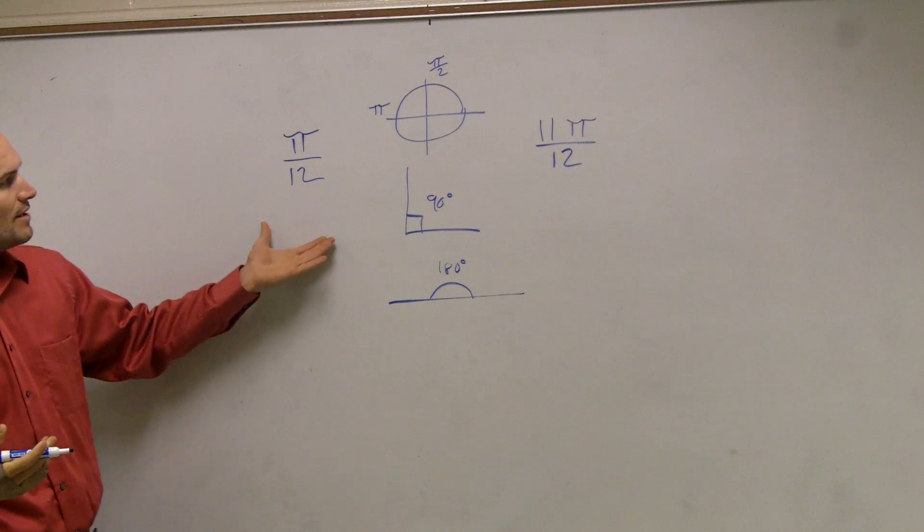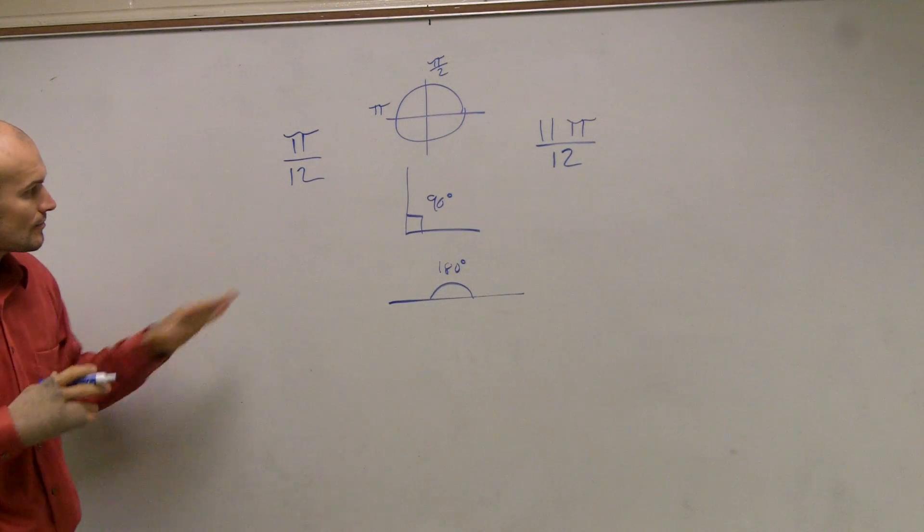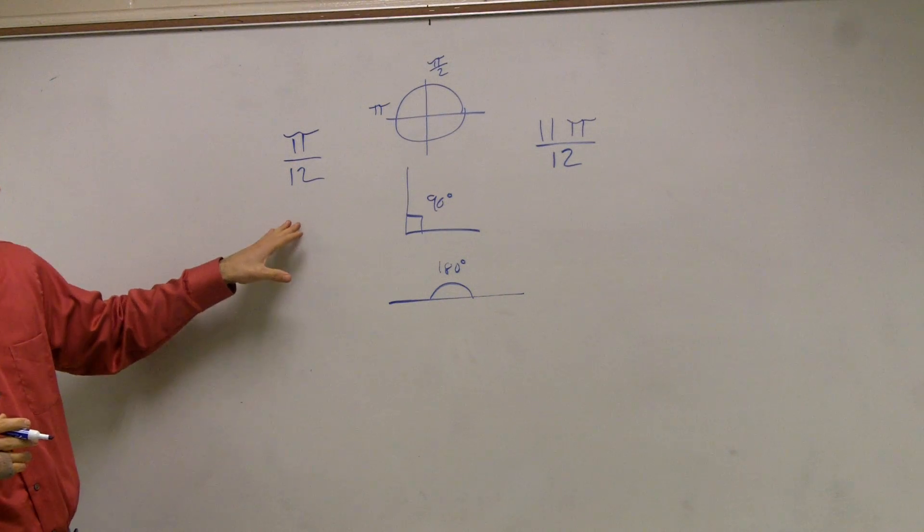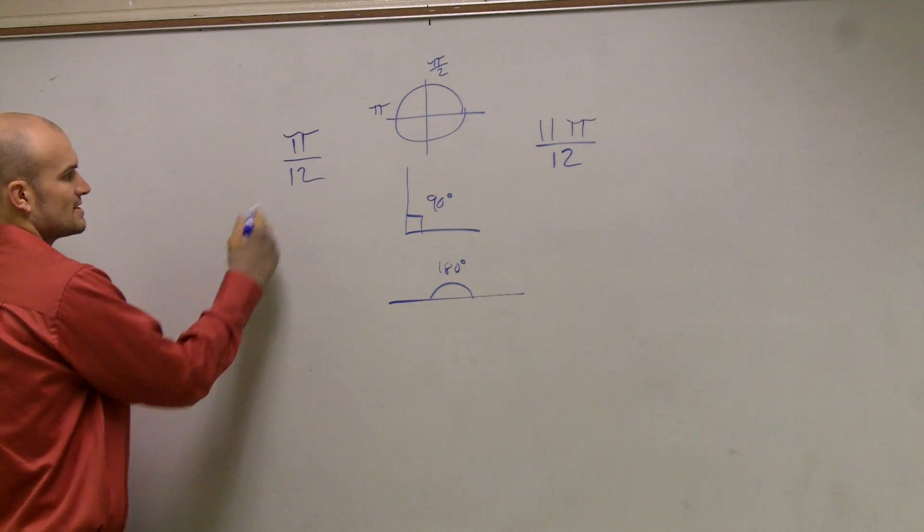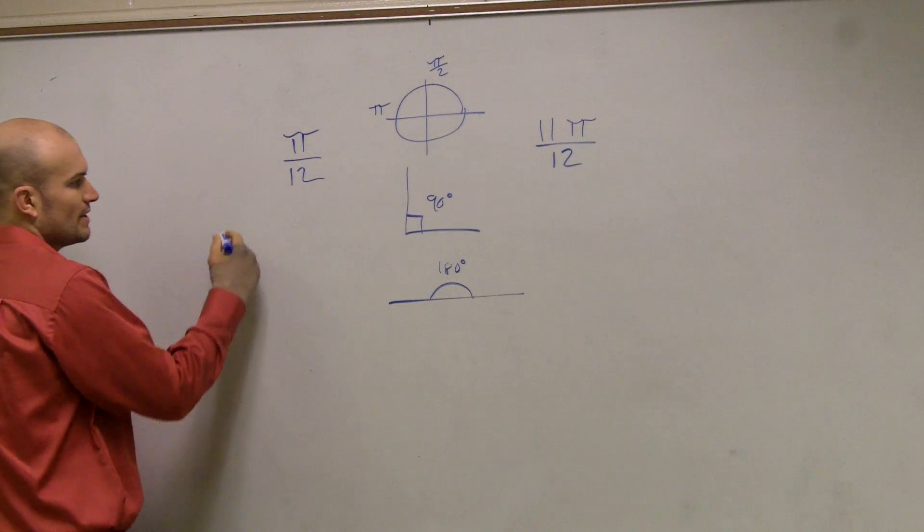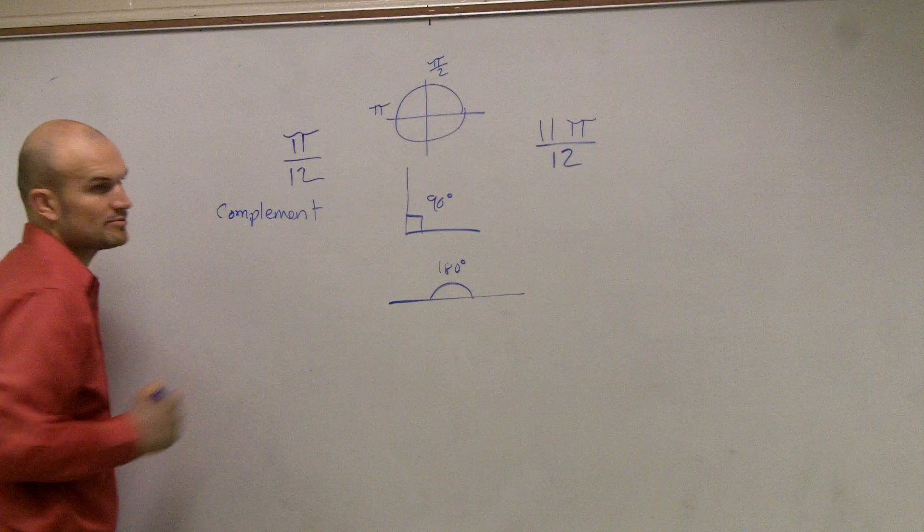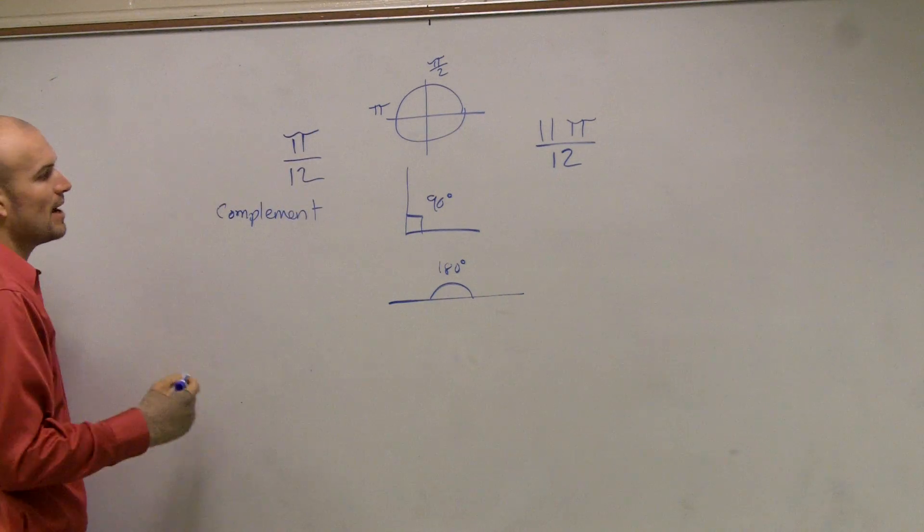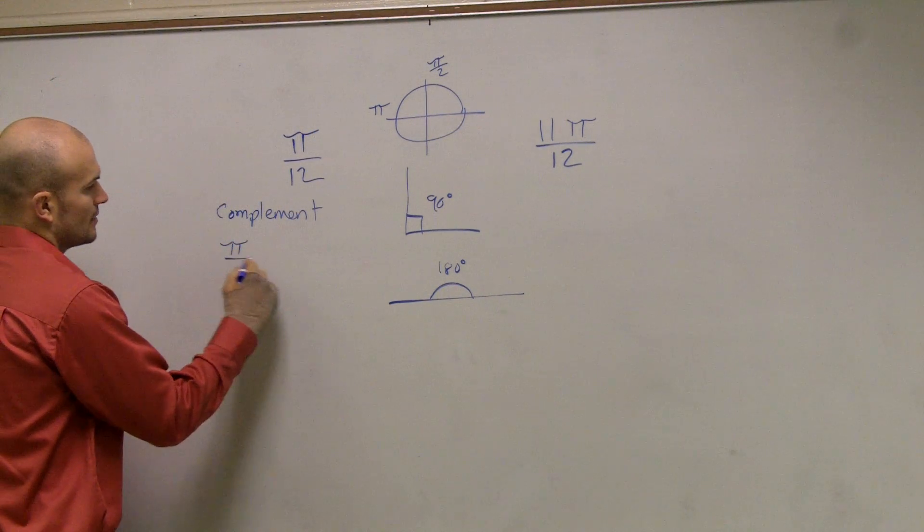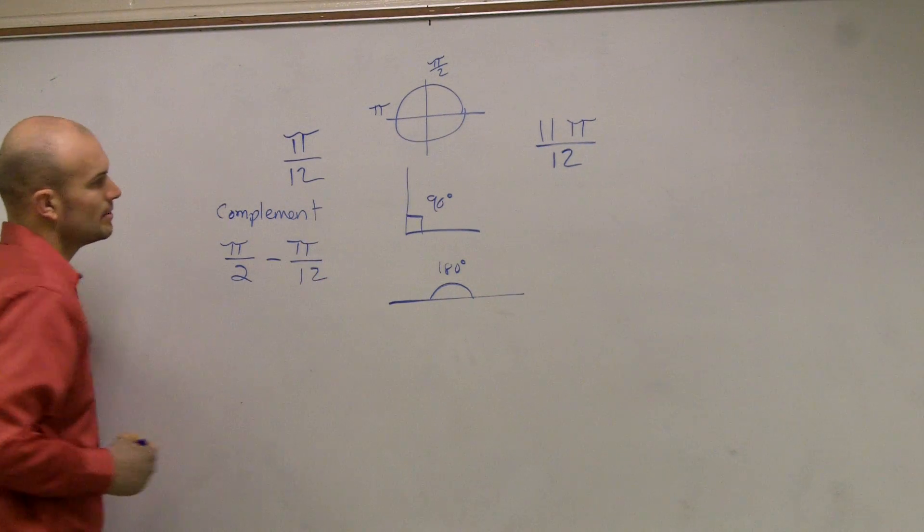So therefore, if I want to find what the complement and the supplement is, what I'm going to do is I'm going to subtract. So let's say I want to find the complement of this. Well, π over 12 is going to be right in there. So to find the complement, I'm going to subtract from π over 2. So I'll say π over 2 minus π over 12.